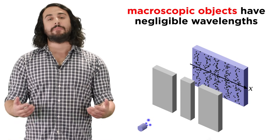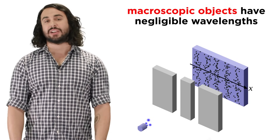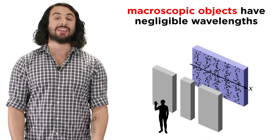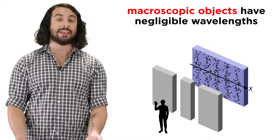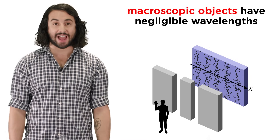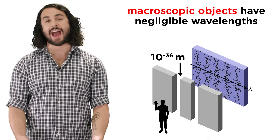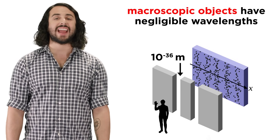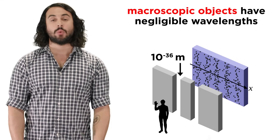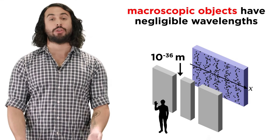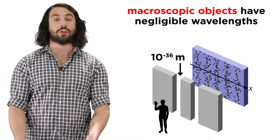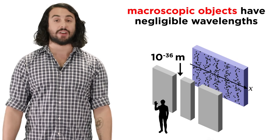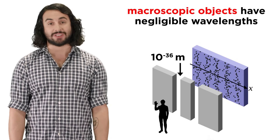But remember that massive objects have incredibly tiny wavelengths, so for something like a human being to diffract, they would have to pass through an aperture around 10 to the negative 36 meters wide, which is a trillionth of a trillionth of a trillionth of a meter. So this will be pretty tough no matter how much you try it.